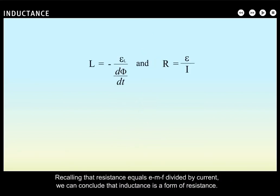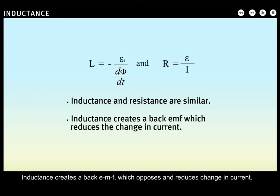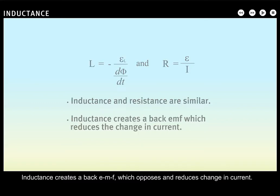Recalling that resistance equals EMF divided by current, we can conclude that inductance is a form of resistance. Inductance creates a back EMF, which opposes and reduces change in current.